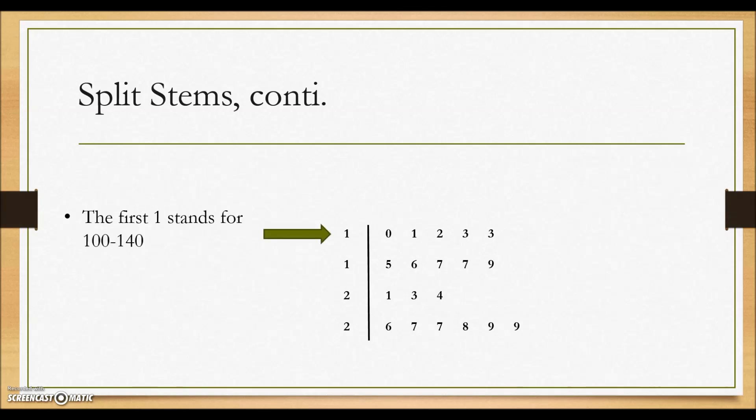The first one stands for 100 to 140, the second one stands for 150 to 190 and so on with the two 2s that are listed down in the stem plot.